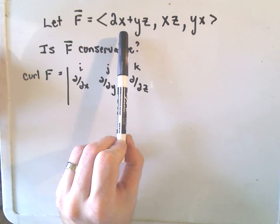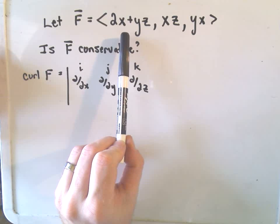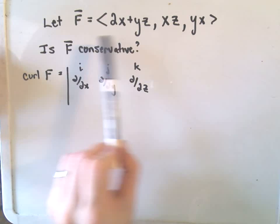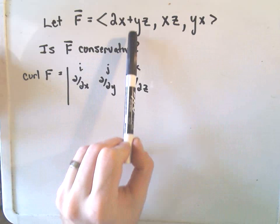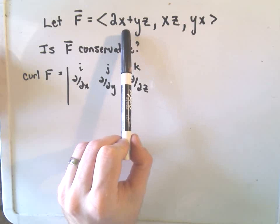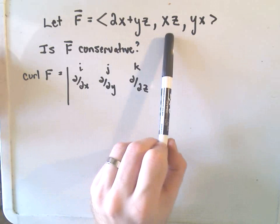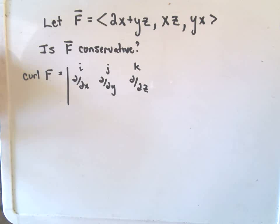So remember to use this result, the result from the first video. These functions, the vector field had to be defined on all of R3, and the partial derivatives of each component had to be continuous. And again, notice these are very well-behaved functions, so you will have that happening.